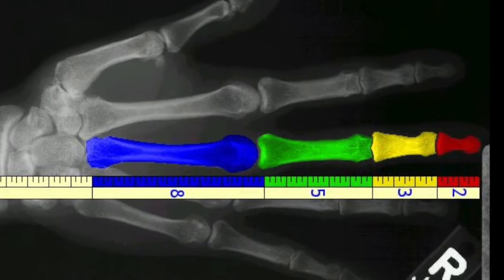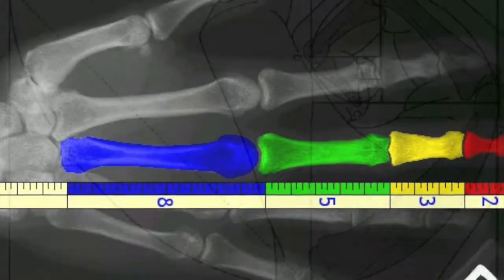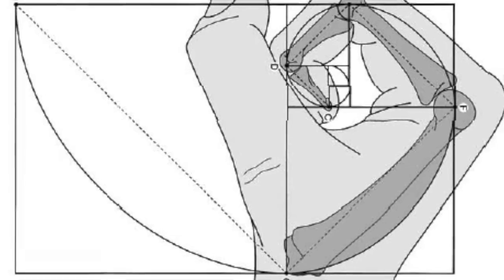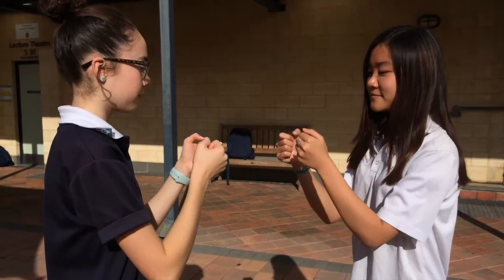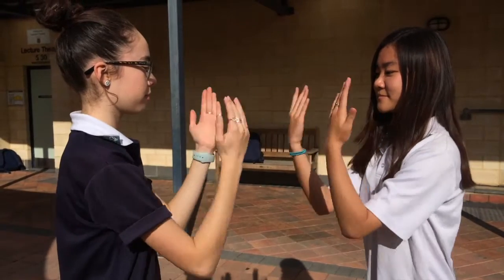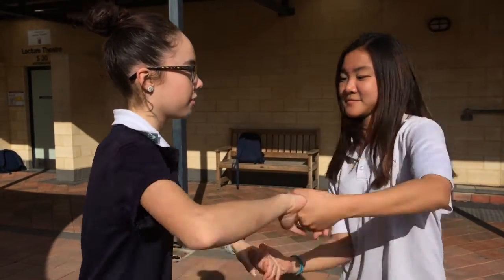The Fibonacci sequence is also present in the layouts of one's hand. You have two hands, each with five digits and eight fingers, composed of three sections. All Fibonacci numbers. Coincidence? This is what allows us to be able to clench our hands into fists, which are basically spirals.